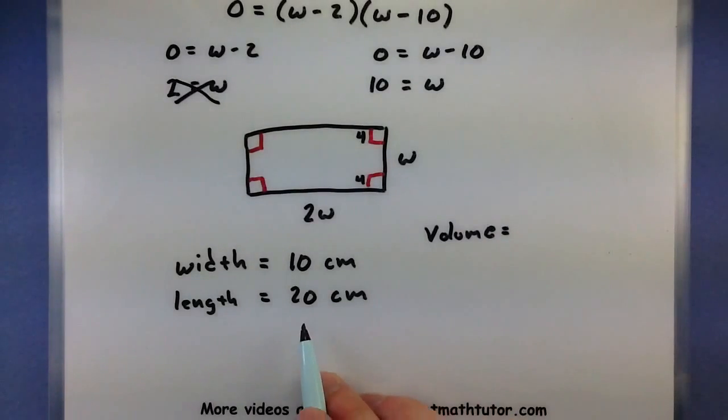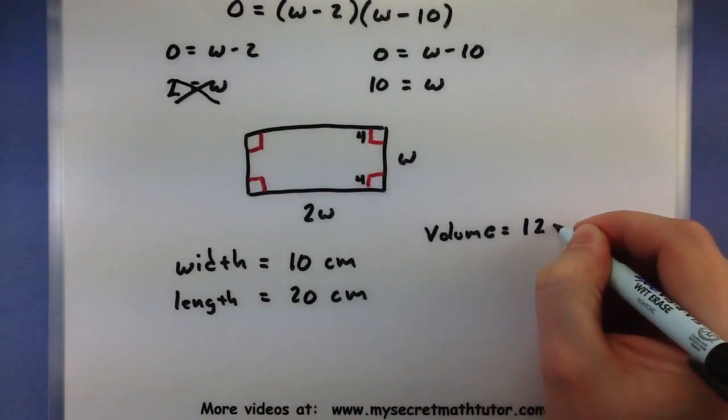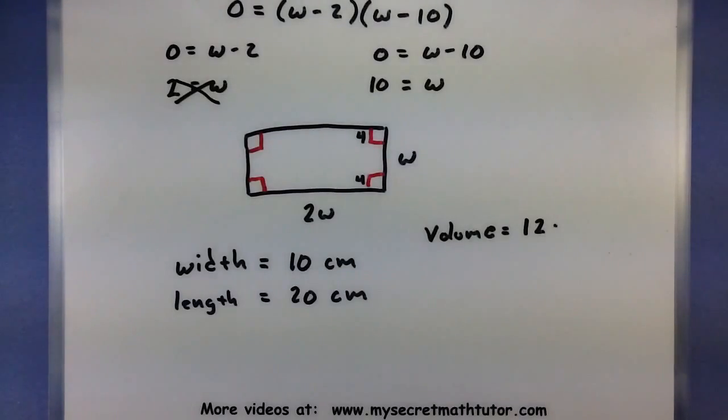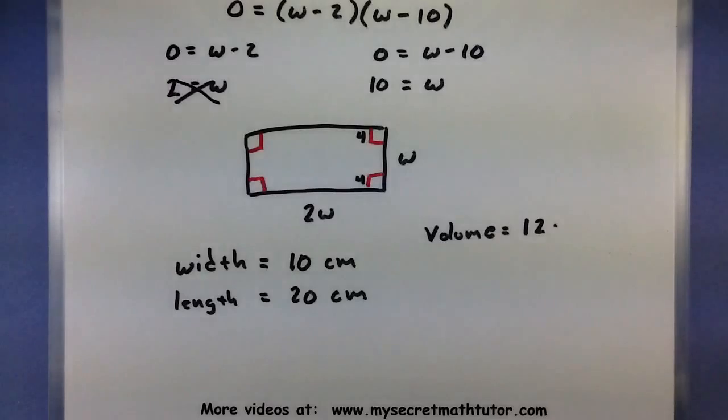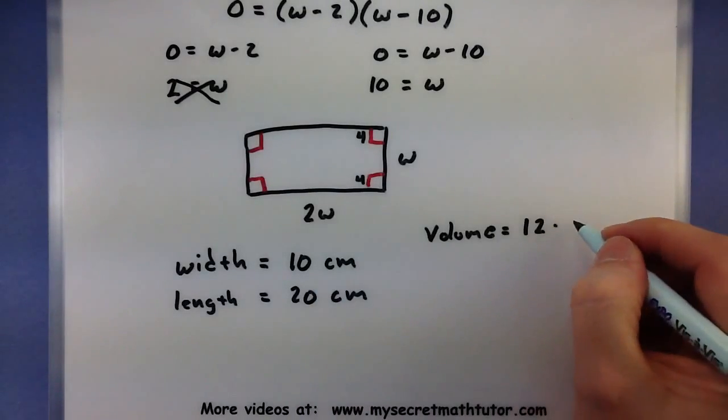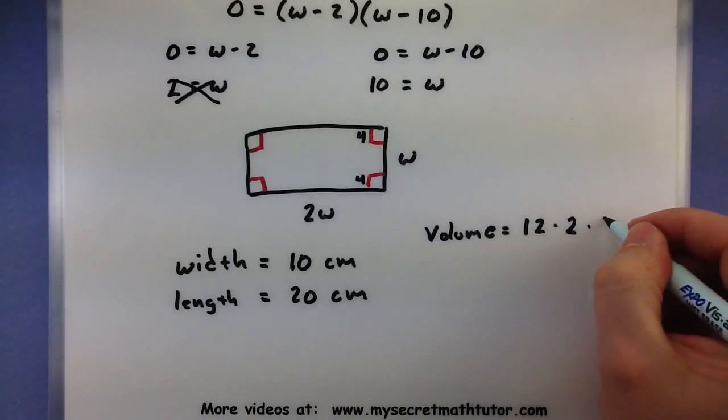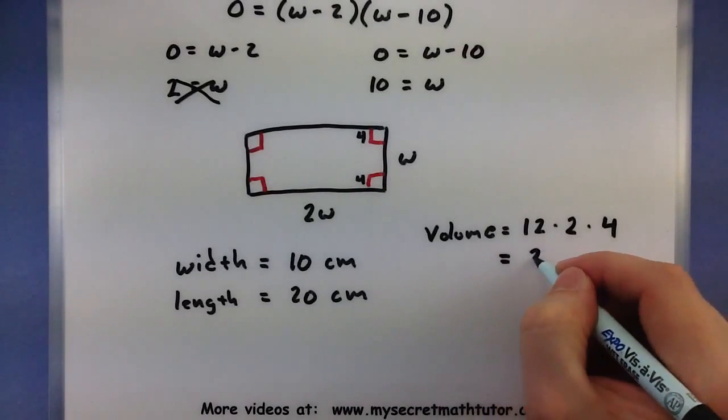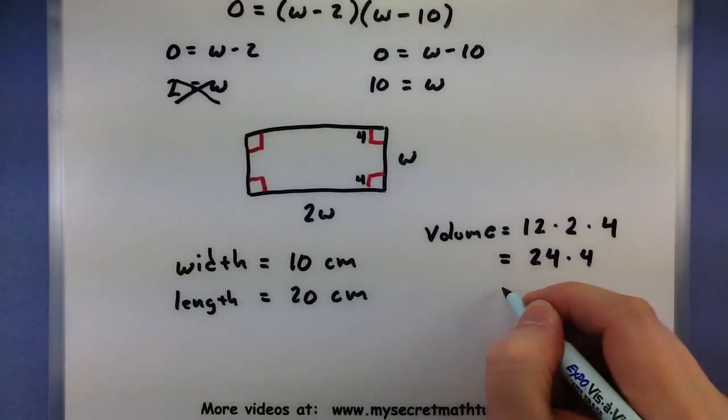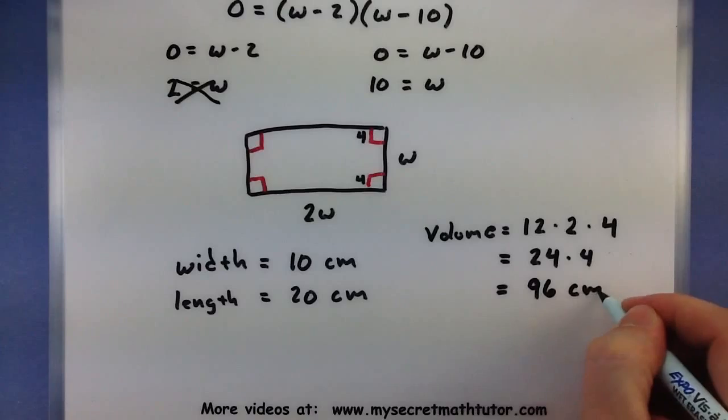So the length of this box will be 20 minus a couple of those 4 inch squares, so 20 minus 8, or 12. The width of the box comes from the width of the cardboard minus a couple of those 8 inch squares, so 10 minus 8 is 2. Then we can multiply by the height of our open top box, 4. So 24 times 4, and sure enough, that's 96 exactly what the problem says it should be.